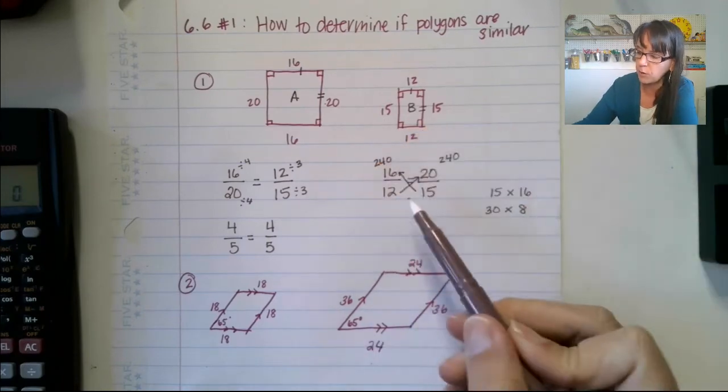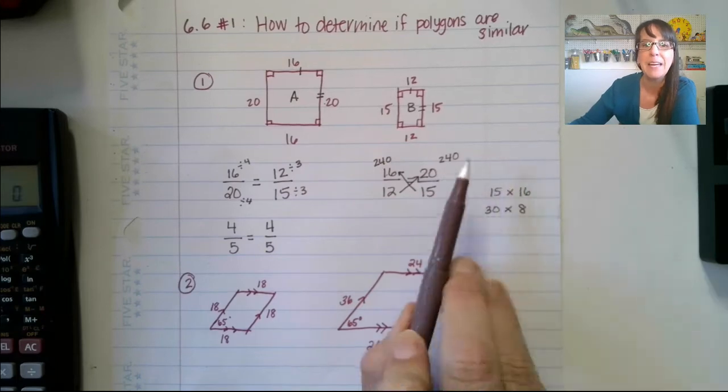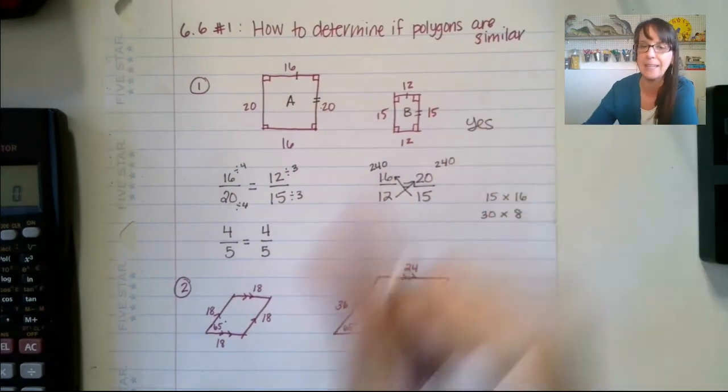And so if you do the cross products method and remember, make like a rocket ship and shoot from the bottom up, and you get the same thing, then yes, those are proportional. So are these two figures proportional? Yes, they are.